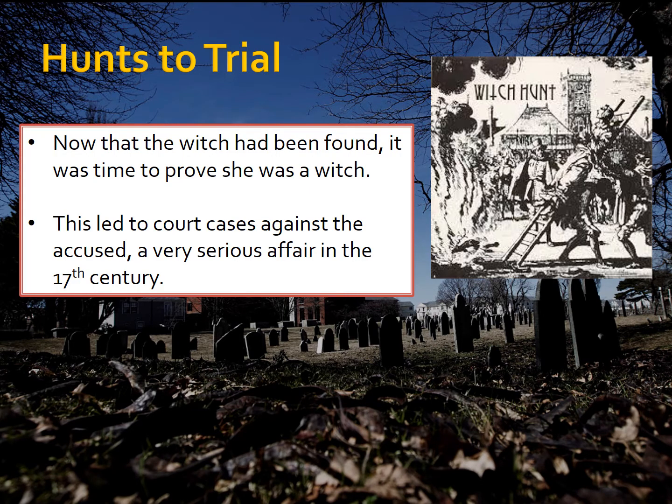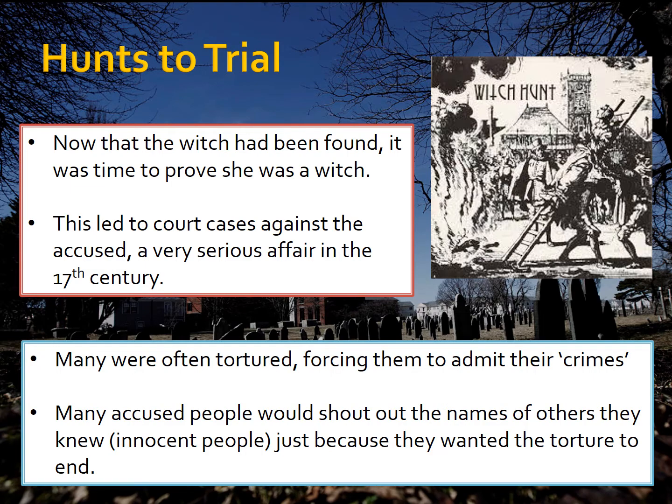Now, how it goes from the hunt to the trial. Now that the witch has been hunted and found — as you remember from the last lesson with Matthew Hopkins — it was time to prove she was a witch, leading to court cases against the accused. This was a very serious affair in the 17th century. Many were often tortured when on trial, which forced them to admit their crimes. Many accused people would shout out the names of innocent others just to make the torture stop, which led to even more people being put on trial.